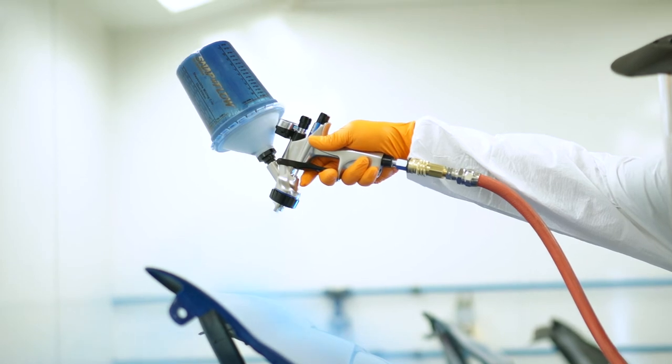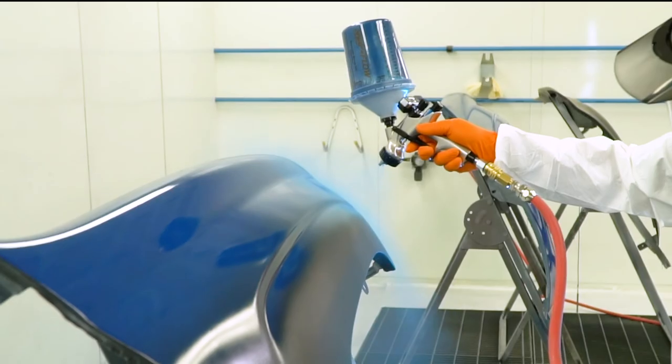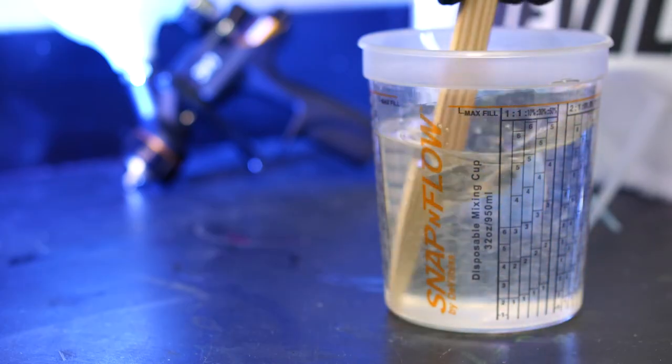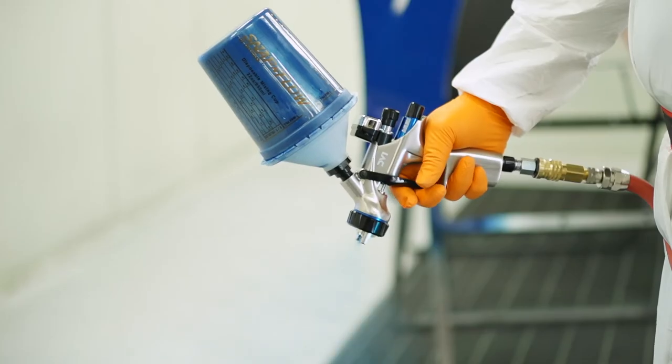Now you're ready to paint again. That's how simple it is to use the snap and flow disposable paint cup system by DeVilbiss Automotive Refinishing. It's so easy you'll be finished in no time.